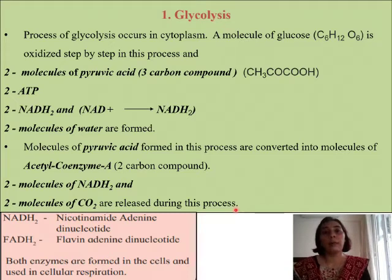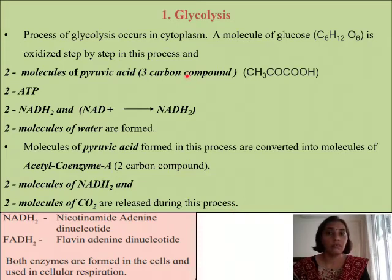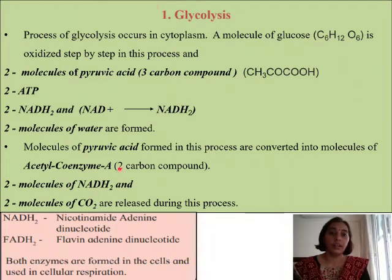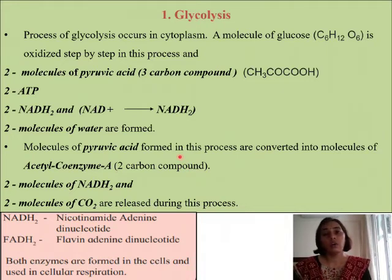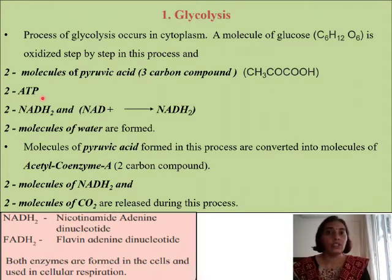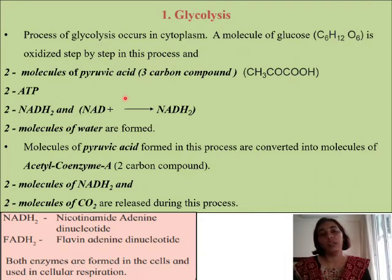Though we are studying an energy-releasing process, cellular respiration is a process in which energy is going to be released. But during this process of glycolysis, two ATP molecules are utilized, and hence this is also called the investment phase. Overall we get four ATP molecules, but since two are utilized for glycolysis we count only two ATP molecules net. So this is the first step, that is glycolysis.